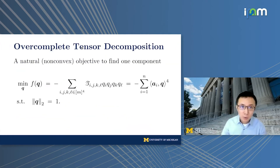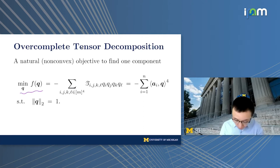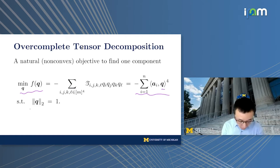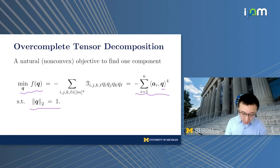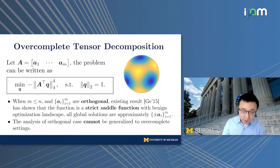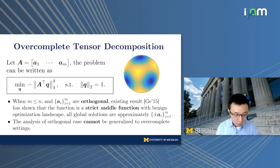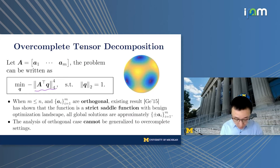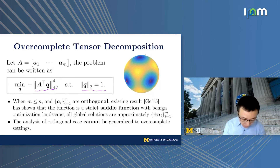To solve this problem, a natural idea is to consider an optimization formulation where we minimize a loss function — a fourth-order polynomial with respect to Q, constrained over the sphere to remove scaling ambiguities. This naturally reduces to maximizing or minimizing the negative L4 norm of the tensor component constrained over the sphere. This problem is well studied when rank M is no larger than N and components are orthogonal.